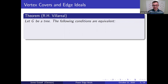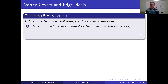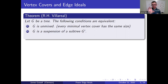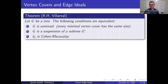This ideal has one vertex cover with three vertices and one with two vertices, so this edge ideal is not Cohen-Macaulay because it is unmixed. There's a lot of research in this area. I want to give one theorem by Villarreal: let G be a tree. The following conditions are equivalent. First, G is unmixed, meaning every minimal vertex cover has the same size. This is only true for trees when G is a suspension of a subtree — taking a subtree G-prime and attaching an edge and a vertex to every vertex. And if these conditions are met, the edge ideal is Cohen-Macaulay.